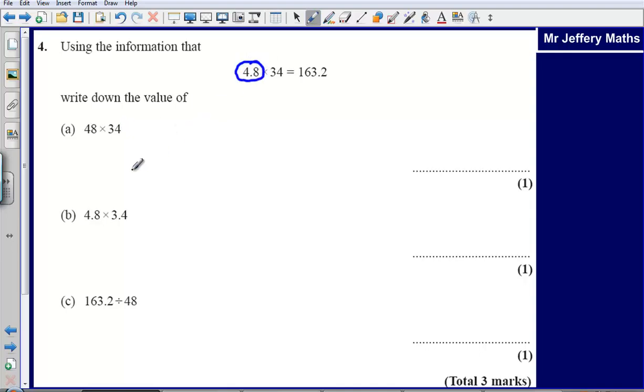All that we can say is that this 4.8 has been multiplied by 10, so 4.8 has been multiplied by 10 to make 48. So that means that our answer would in turn be multiplied by 10, so our answer to that sum would be 1632, just 163.2 multiplied by 10.